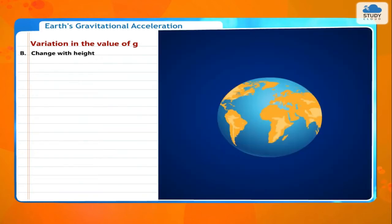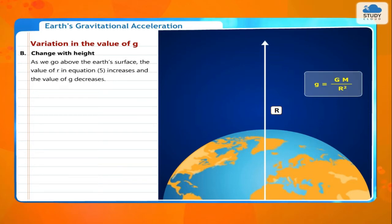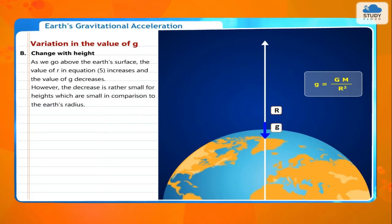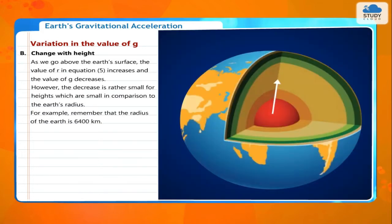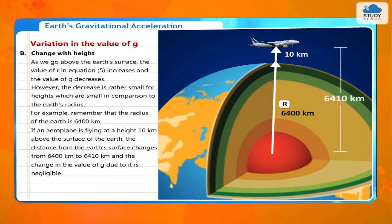Change with height. As we go above the Earth's surface, the value of R in the equation increases and the value of g decreases. However, the decrease is rather small for heights which are small in comparison to the Earth's radius (6400 km). For example, if an airplane is flying at a height of 10 km, the distance changes from 6400 km to 6410 km, and the change in g is negligible.